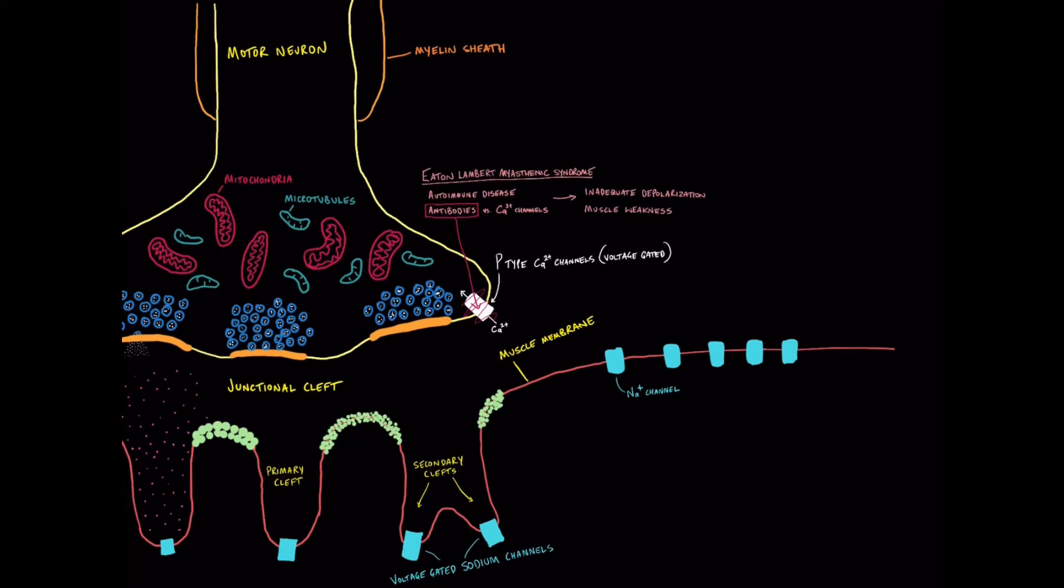So another one we can talk about is hypermagnesemia. So high concentrations of magnesium can actually block these P-channels, these P-type calcium channels, and prevent calcium entry into the motor neuron nerve terminal. And again, we know from what we understand now that if we have reduced calcium entry into the nerve terminal, then we get reduced acetylcholine release into the junctional cleft. So we get impaired depolarization.